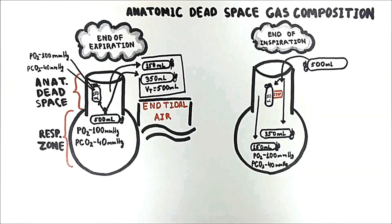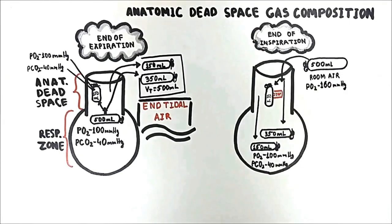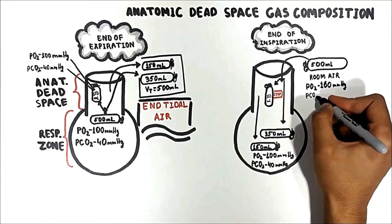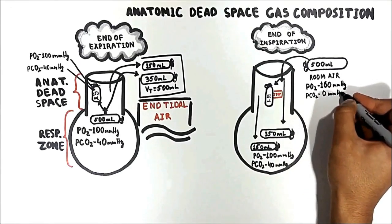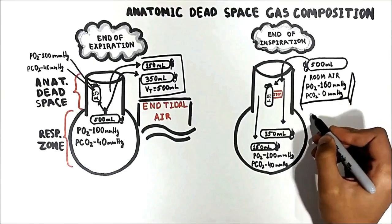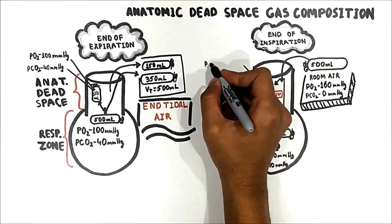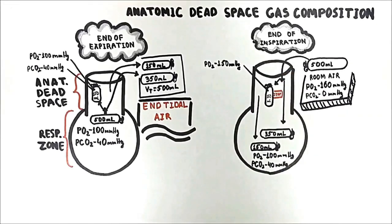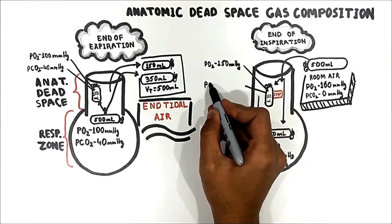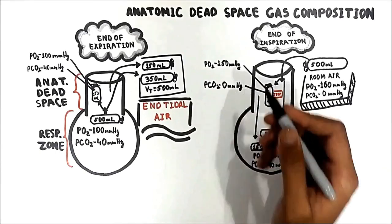At the end of inspiration, the anatomic dead space is filled with humidified room air. The partial pressure of oxygen in room air is 160 mmHg and PCO2 is considered to be 0 mmHg. So at the end of inspiration, the anatomic dead space has humidified room air, therefore PO2 slightly drops to 150 mmHg, while PCO2 remains 0 mmHg, the same as room air.